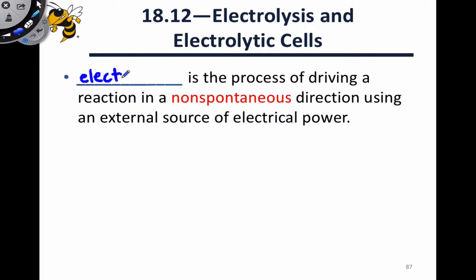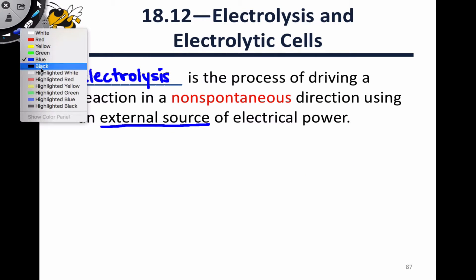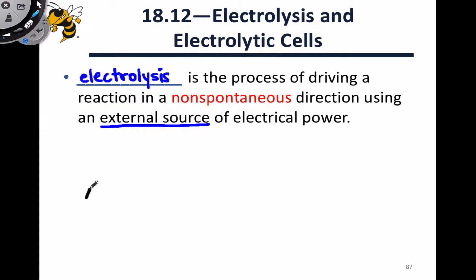Electrolysis is the process of driving a non-spontaneous redox reaction forward using an external source of electrical power or electrical current. To begin thinking about this, I want to refer to a table in your text that reminds us about the relationship between delta G and the sign of the cell potential. When delta G is greater than zero, the cell potential is less than zero — that is, the cell potential is negative — and we're in a situation where the forward redox reaction is non-spontaneous.